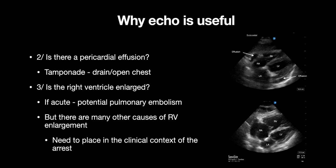The third POCUS question is, is the right ventricle enlarged? If acute, this can represent a pulmonary embolism. However, it's important to remember there are lots of other causes of right ventricular enlargement, and therefore this finding needs to be placed within the clinical context.